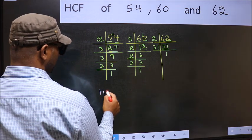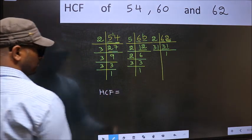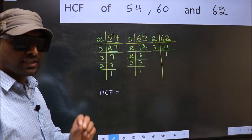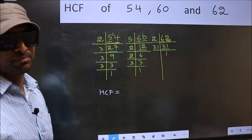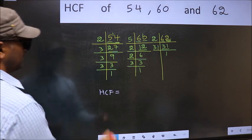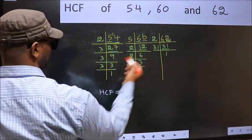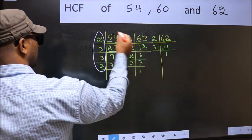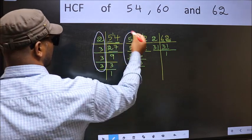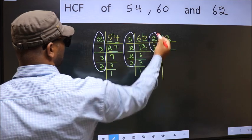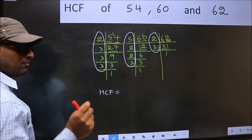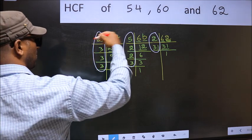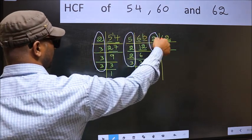Therefore, our HCF is the product of the numbers which should be present in these 3 places. That is here, and here, and also here. So now, we should find the numbers which are present here, here, and also here.